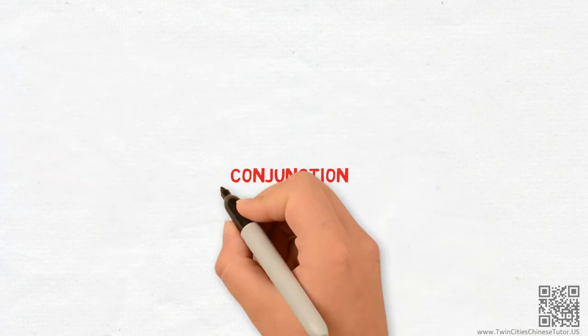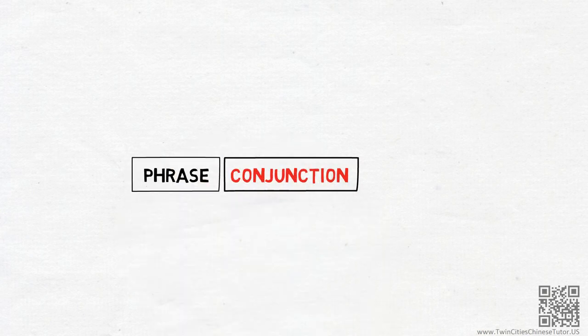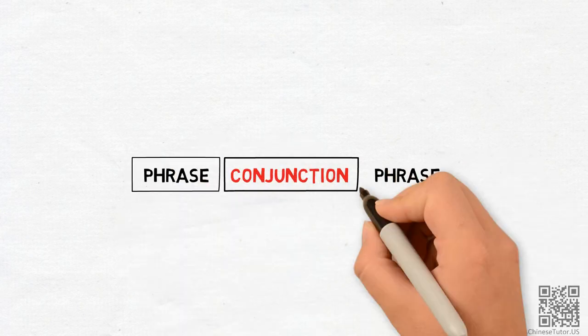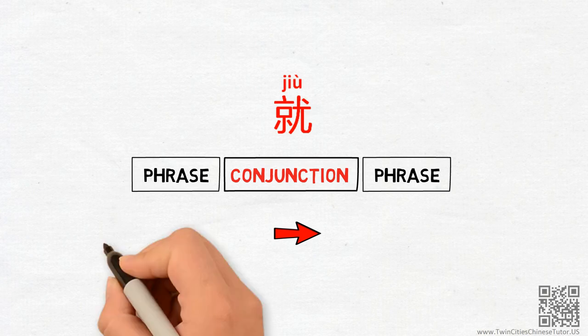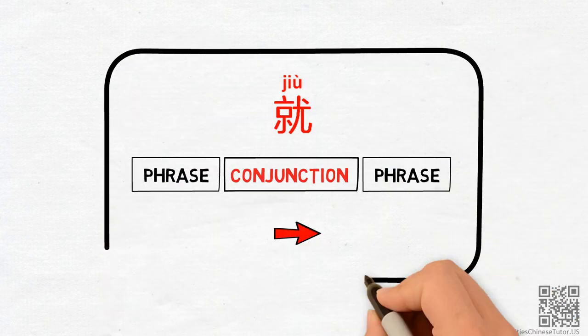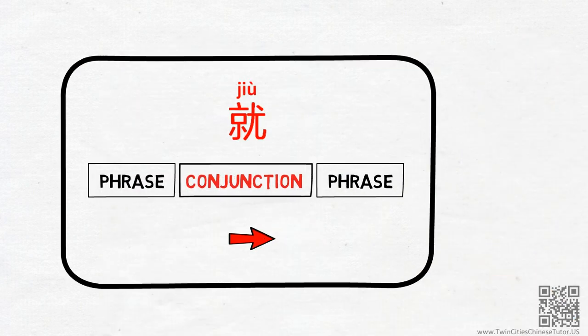Conjunctions are the coordinators which connect the phrases in a sentence. As a conjunction, jiu can still be viewed as an emphasizing arrow. However, its position is different from the adverb jiu, and therefore the meaning it implies is also different.